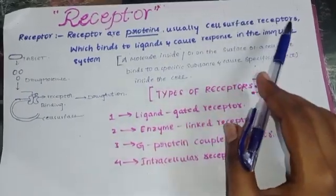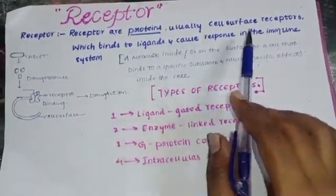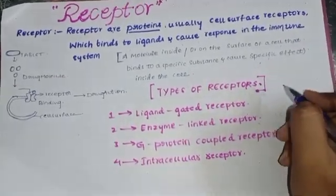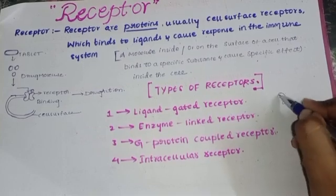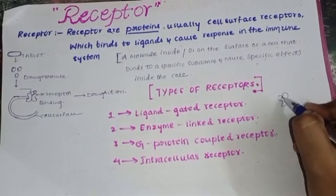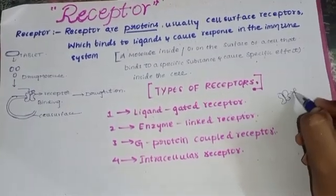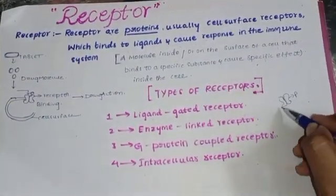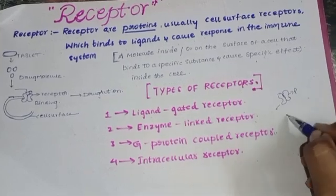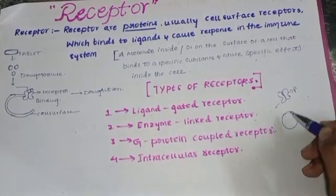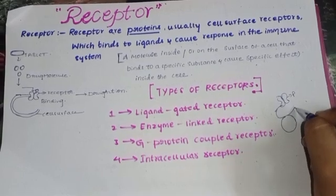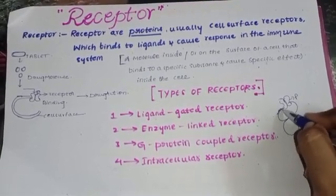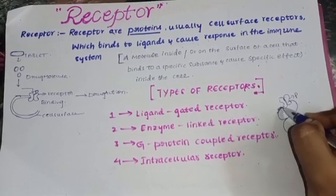Usually, cell surface receptors which bind to ligand and cause a response in the immune system. For receptor structure, we have to consider it. These are proteins — remember, proteins — usually cell surface receptors. This is the structure: these are cells, and we have to consider the surface, which is the cell surface. Cell surface receptors.